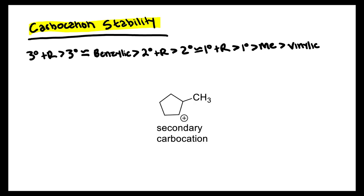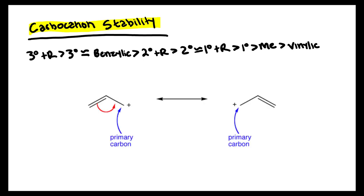Secondary carbocations are similar in stability to carbocations that are primary with resonance, because remember, primary carbocations are not very stable, but when they have resonance they can become close to as stable as a secondary carbocation.